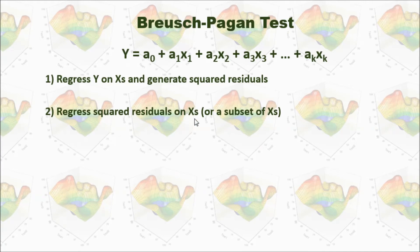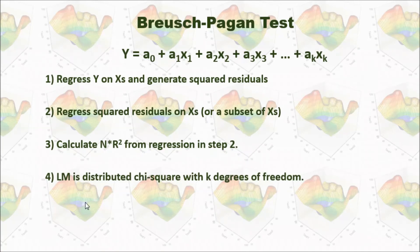Then we will regress squared residuals on X, or a subset of Xs. Then we calculate n times R squared from regression in step 2. This n is the sample size.